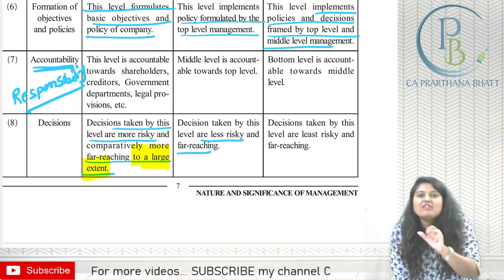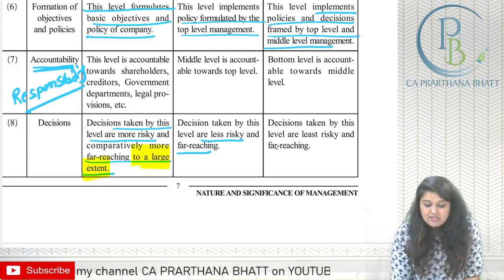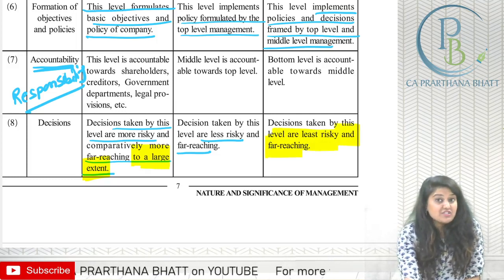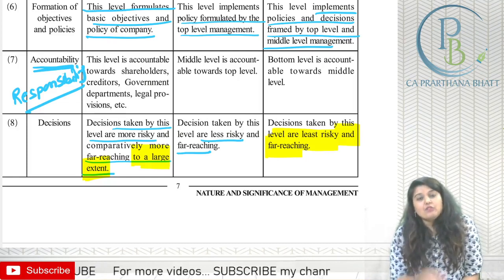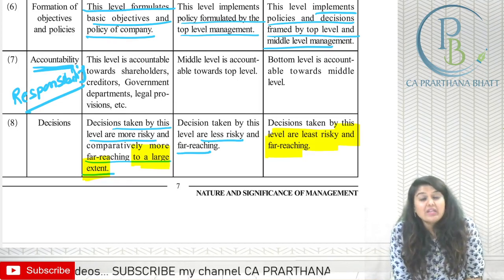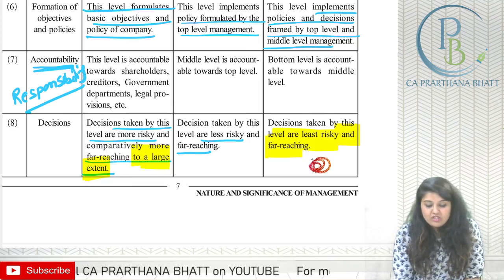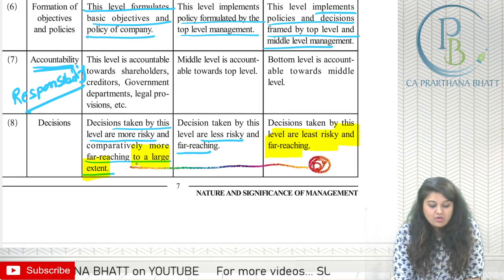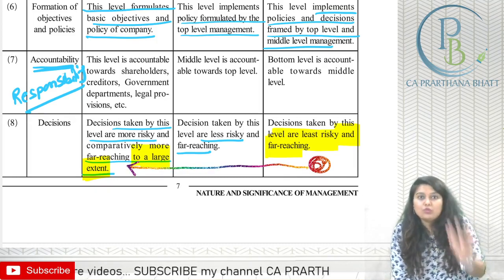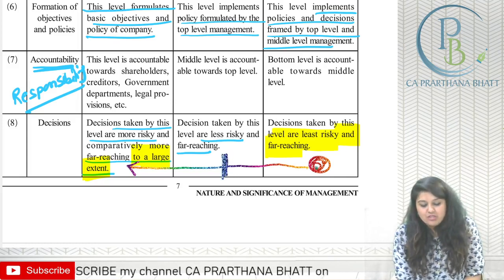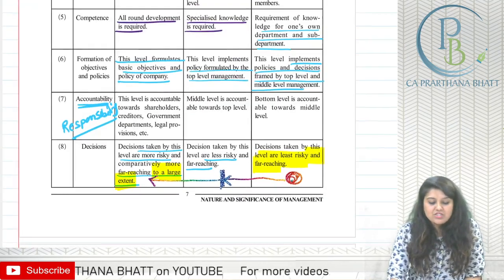Bottom level decisions are least risky but can still be far-reaching within their scope. The decisions made at bottom level impact their work area, and if wrong decisions are taken, that impact can travel upward and affect higher levels too, depending on how the decisions have been made.